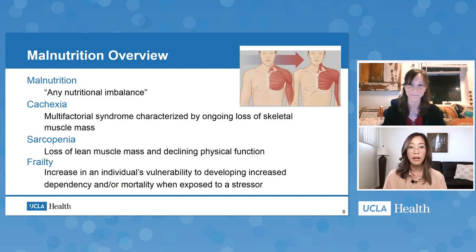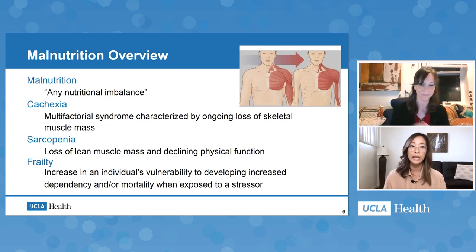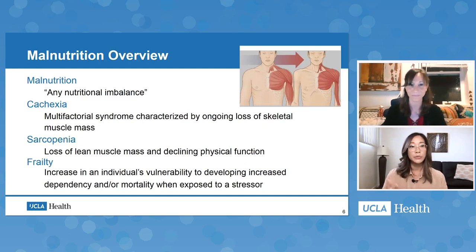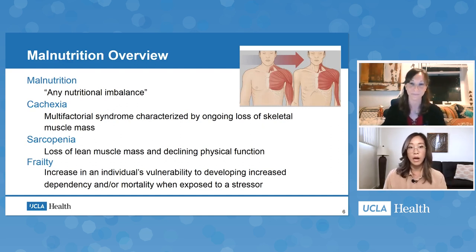The next few terms outline some manifestations of malnutrition as it progresses. Cachexia, also known as the wasting disorder, is defined as ongoing loss of skeletal muscle mass, and this can be with or without loss of fat mass. Sarcopenia is the loss of lean muscle mass and declining physical function. And lastly, frailty is an increase in someone's vulnerability to developing increased dependency or mortality when exposed to a stressor.